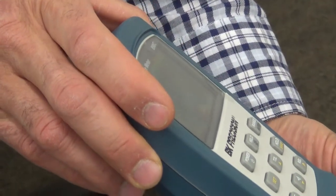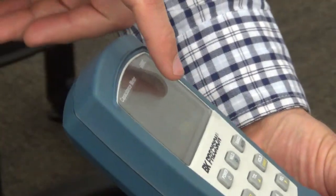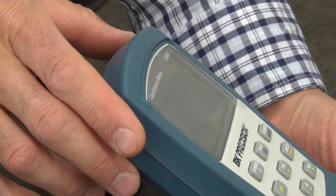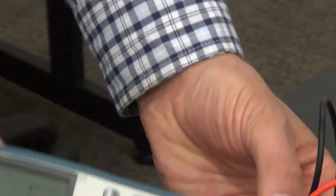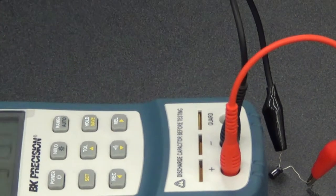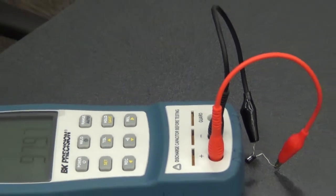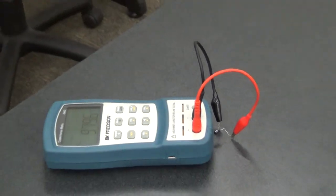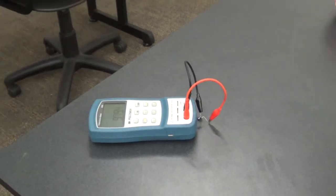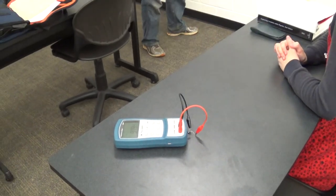So this is one one thousandth of a farad. So now we're going to measure this. Let's see what it actually is. Now that's a nominal measurement. What I mean by nominal is that's what it says, its name is one microfarad. Its actual measurement is 980, what does that say? 9798. But what are the units?